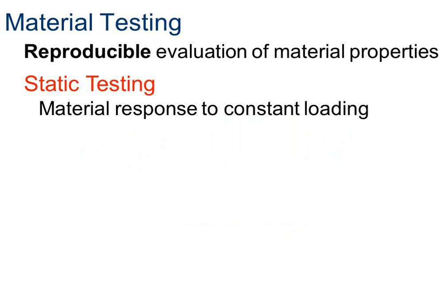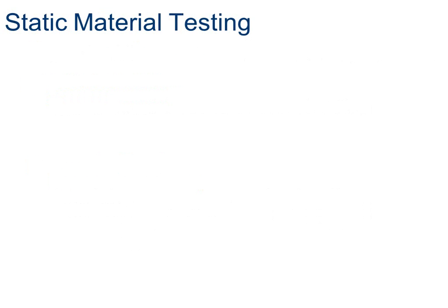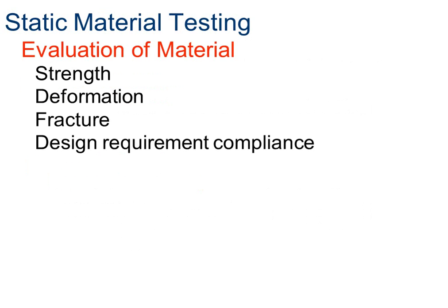There are two kinds of testing. Static testing, where we have a constant load that we put on a material and we see its reaction. And dynamic testing is when we vary the load or vary different conditions, including cycling and mode and the magnitude of the forces that we apply. We're going to talk mainly about static material testing — we're not going to do any dynamic material testing.